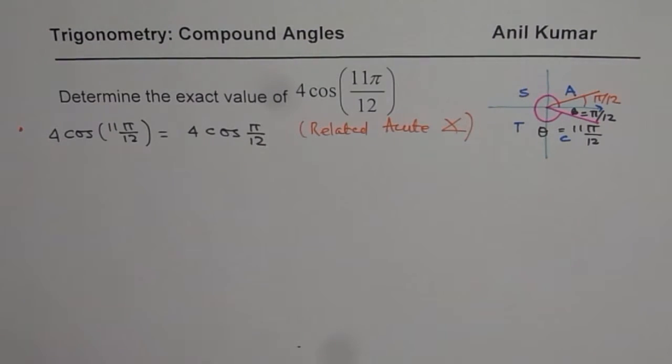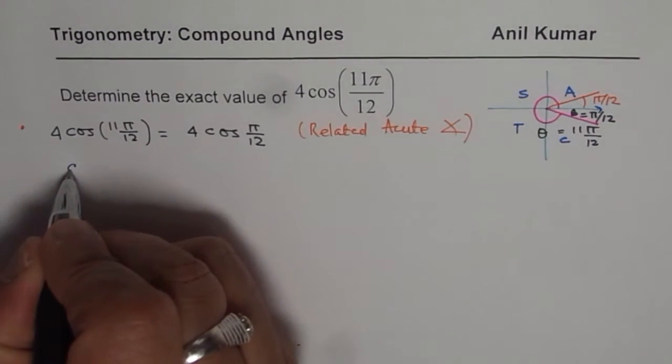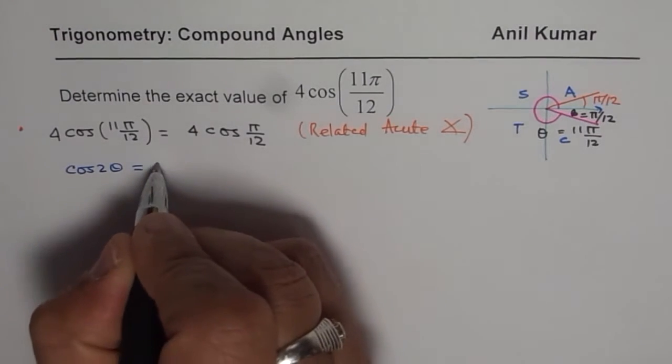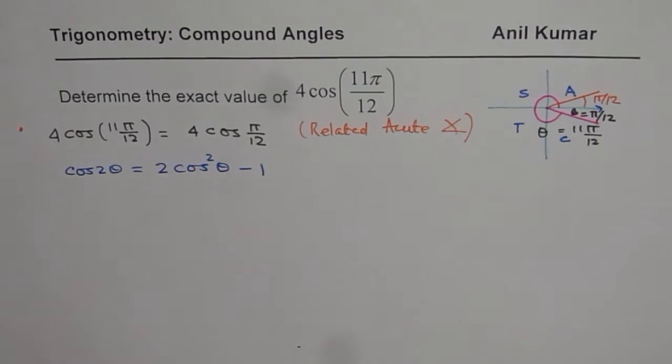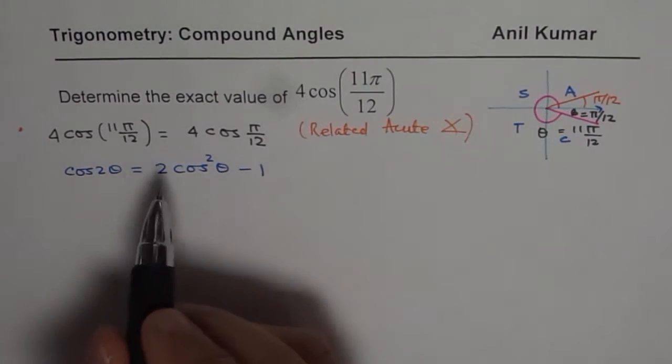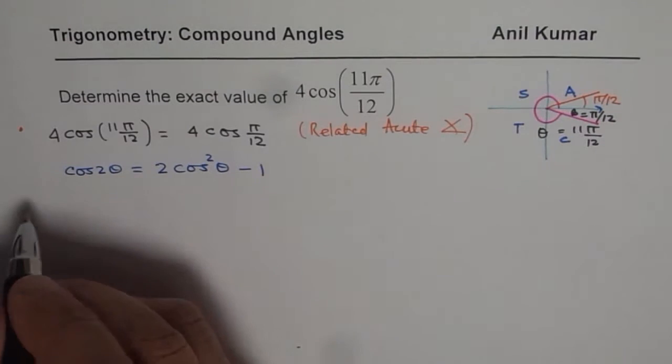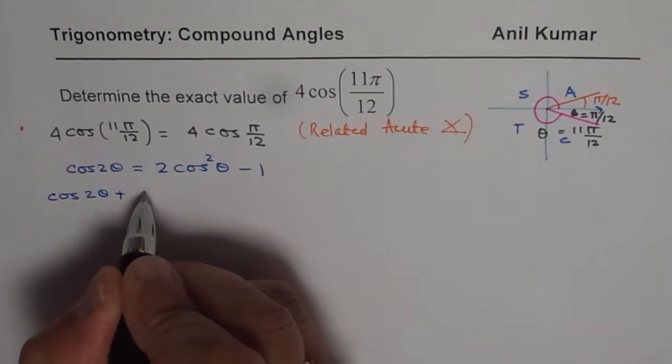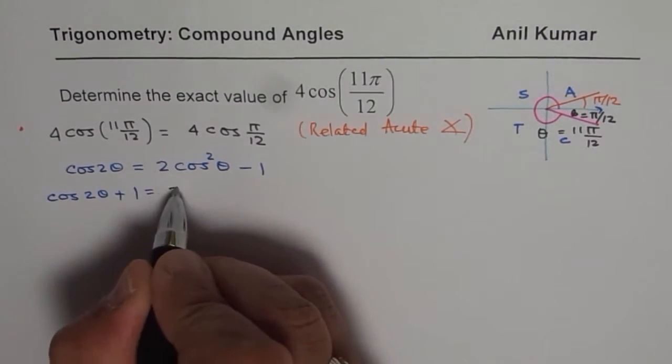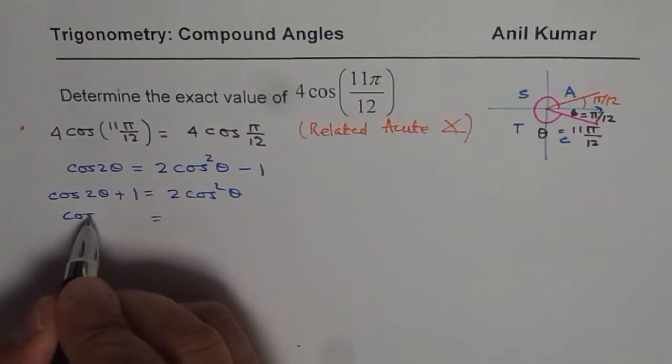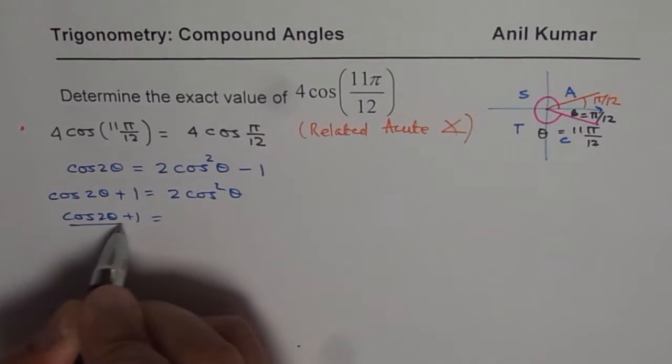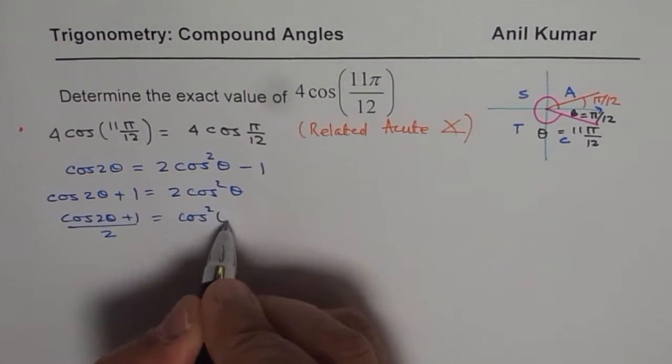Now, the second part is that we really don't know how to calculate π/12. But what we know is that cos of 2θ is equal to 2 cos²θ minus 1. So that is the double angle formula for cosine 2θ. You can rearrange this formula. So we get cos of 2θ plus 1 is equal to 2 cos²θ. And from here, we can rearrange and say cos 2θ plus 1 divided by 2 is cos²θ.